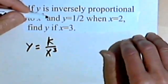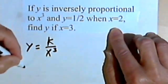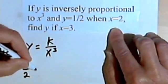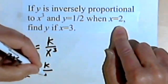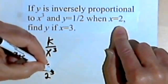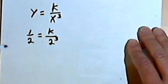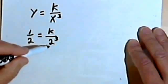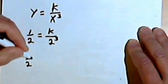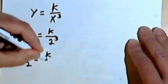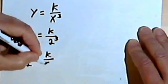And then they're telling me y is 1 half. So instead of y, I'm writing 1 half when x is 2. So instead of x, I'll write 2. And that's 2 to the third. So I can solve for k. First, I'll find 2 to the third.